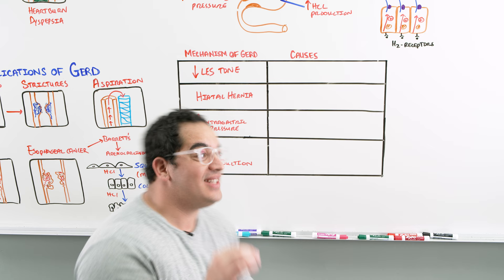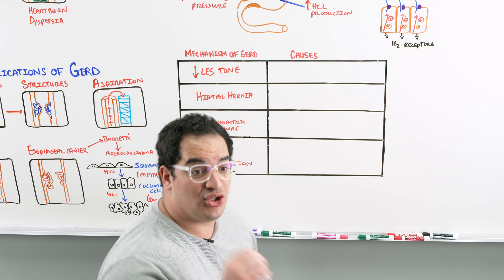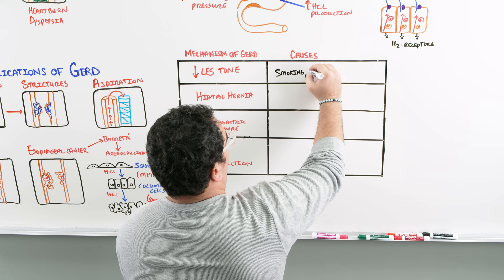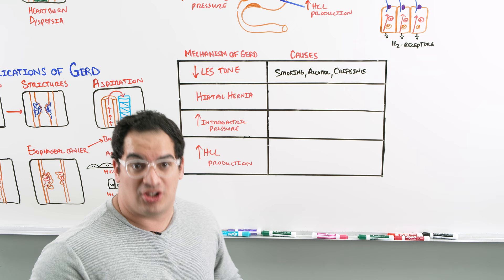What causes low esophageal sphincter tone? The patient may be smoking, drinking alcohol, or consuming large amounts of caffeine. These are very common triggers — smoking, alcohol, and caffeine are triggers that lower the esophageal sphincter tone.